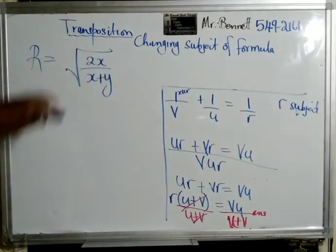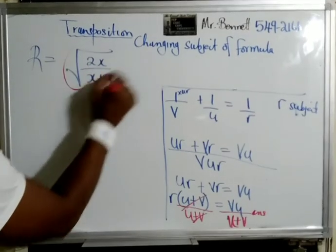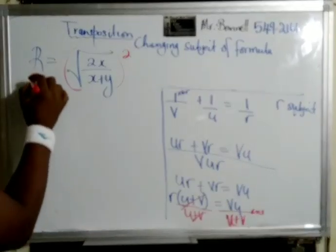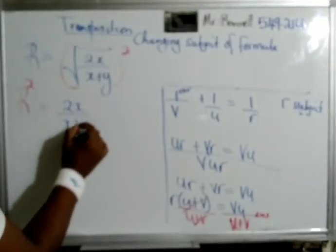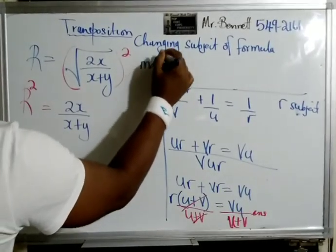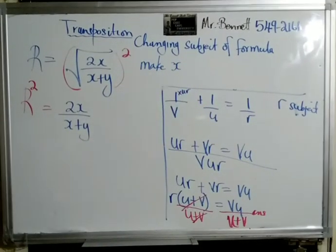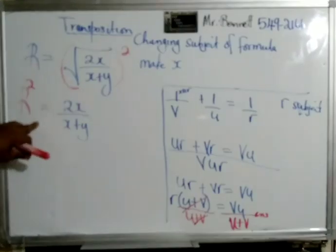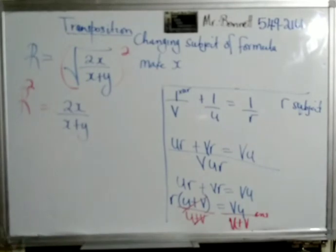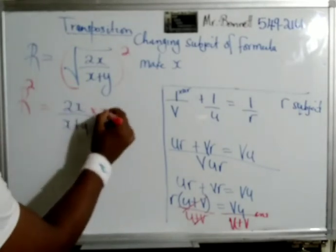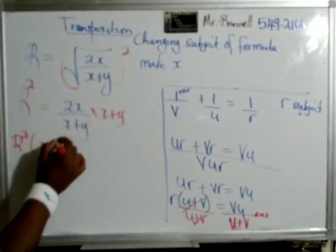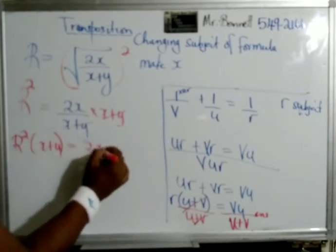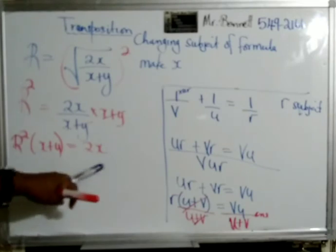We need to get rid of the square root, so we square both sides. This leaves us with r squared equal to 2x over (x plus y). Next, we get rid of the denominator by multiplying both sides by (x plus y). So r squared times (x plus y) is equal to 2x.